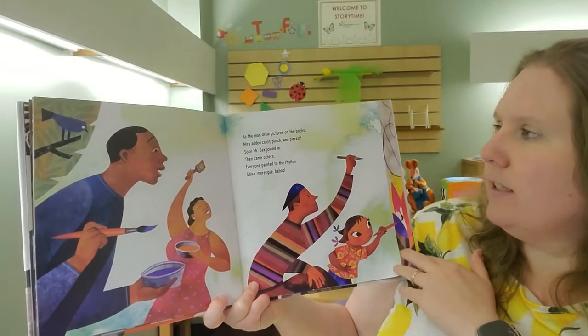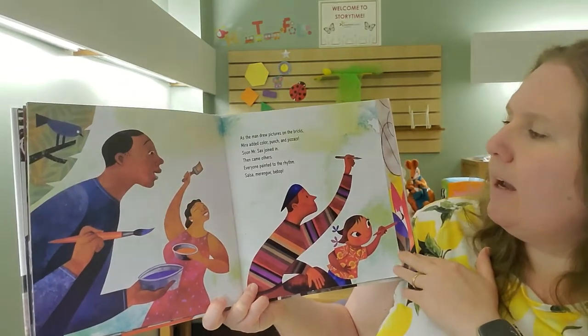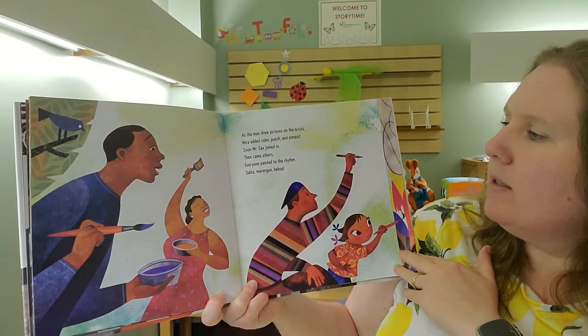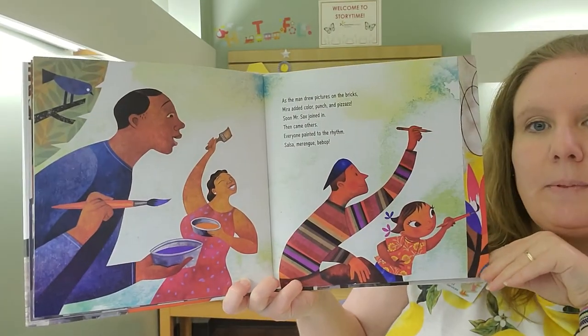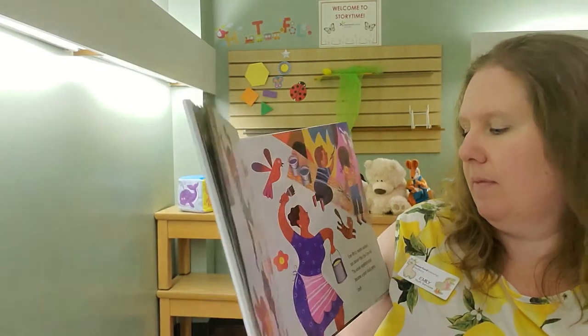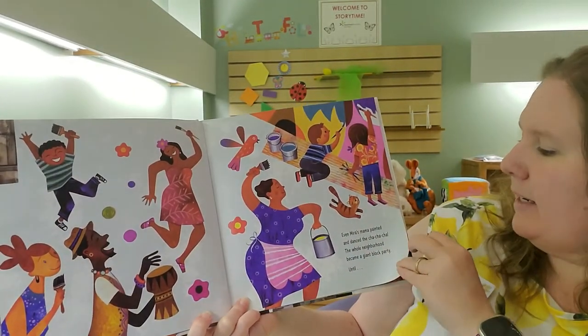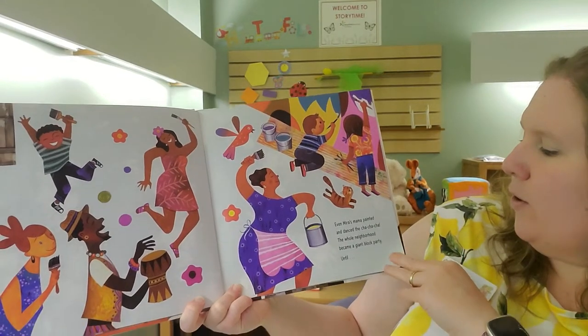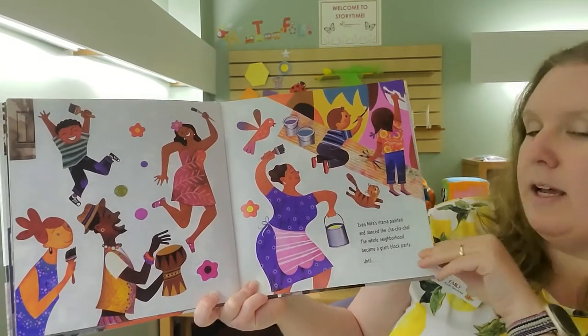Soon, Mr. Sacks joined in. Then came others. Everyone painted to the rhythm. Salsa, merengue, bebop. Even Mira's mama painted and danced the cha-cha-cha. The whole neighborhood became a giant block party.